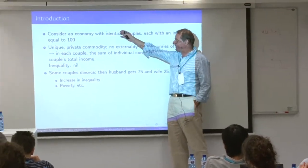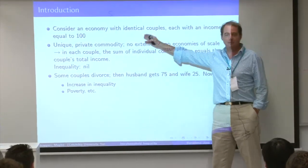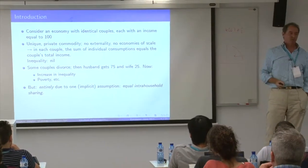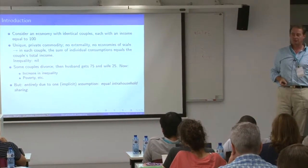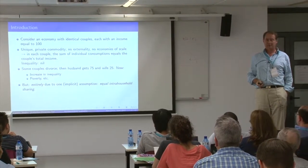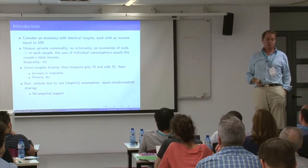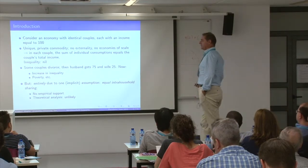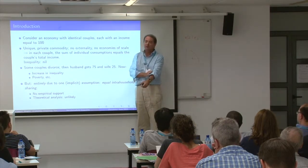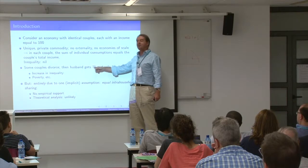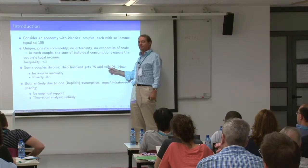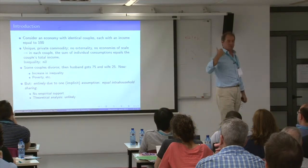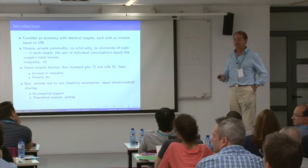This conclusion — before there was no inequality, now there is; before there was no poverty, now there is — is entirely due to one implicit assumption: why those people were married, the division of resources between them was 50-50. There is no reason to make this assumption empirically. From a theoretical point of view, it's very hard to think of any reasonable bargaining model in which if they divorce he gets 75 and she gets 25, yet while married they share equally. It's not even individually rational.